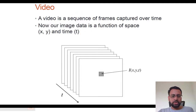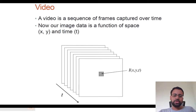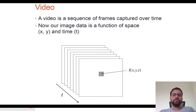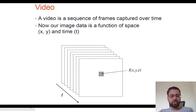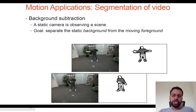Now coming to the video part — a video is nothing but a sequence of frames captured over time. In earlier applications we discussed images, which have spatial dimensions x and y. Now, in addition to x and y, you have images captured at different instances of time. The motion analysis is done between consecutive frames.